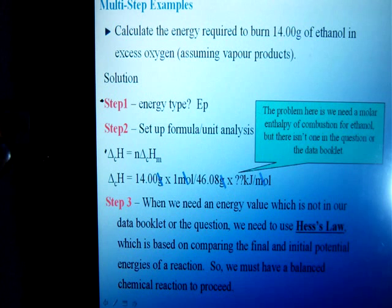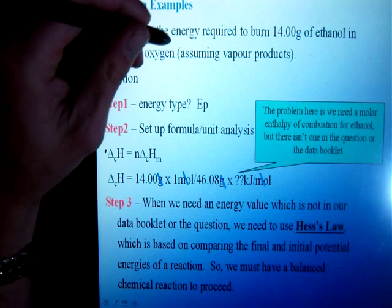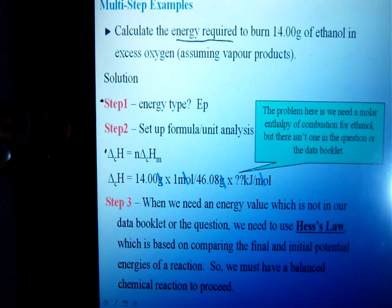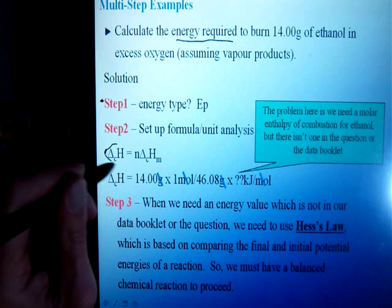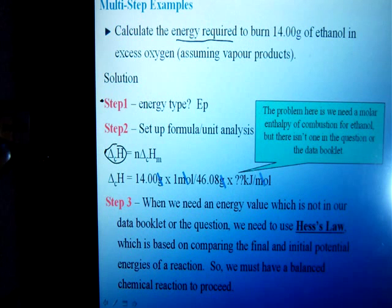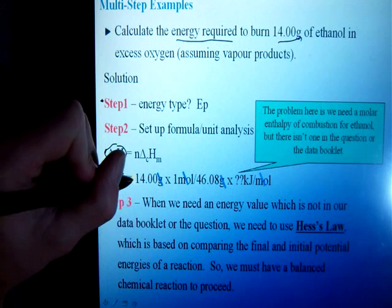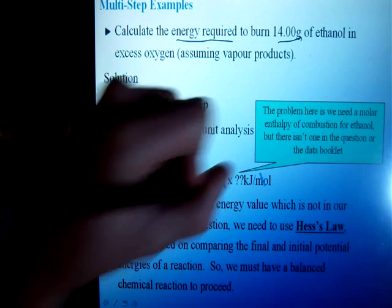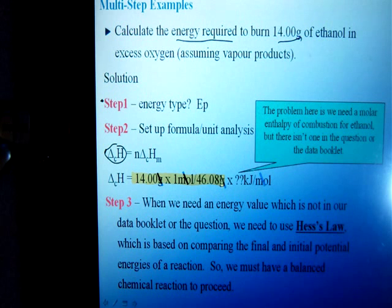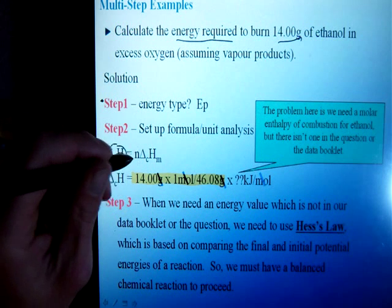Then we have our formula: ΔH = nΔHm. We start plugging in what we need to know. I'm looking for the energy required — is that kilojoules or kilojoules per mole? There's no indication of asking for a per mole or molar value, so it must just be kilojoules. Therefore, I am solving for ΔH. I was given 14 grams of ethanol, so I can convert that into moles using the molar mass. That takes care of the moles part.